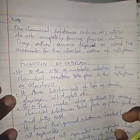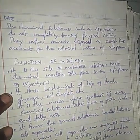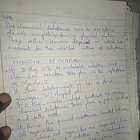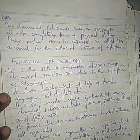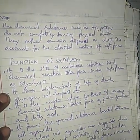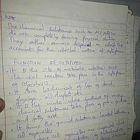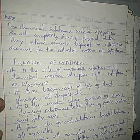Chemical substances such as ATP and proteins do not completely form a physical solution because they are soluble in nature; they rather remain dispersed as colloids. This accounts for the colloidal nature of cytoplasm.